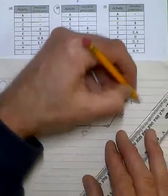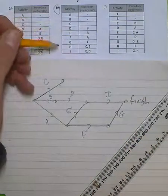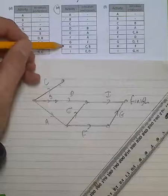So, I'll put my finish here. Now, when we look up the top here, it looks like activity H requires both C and B.